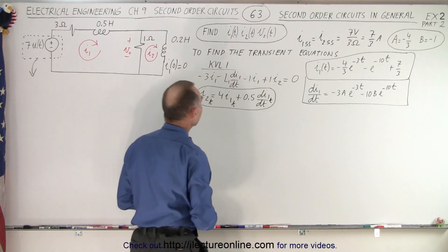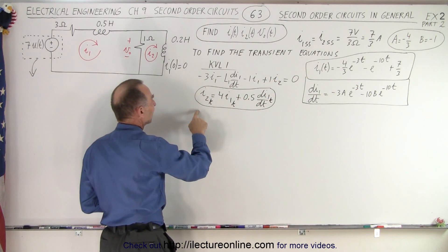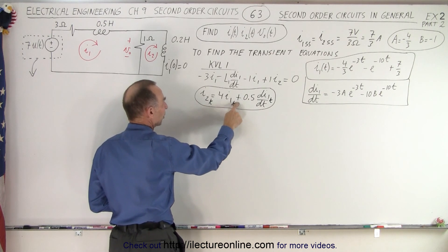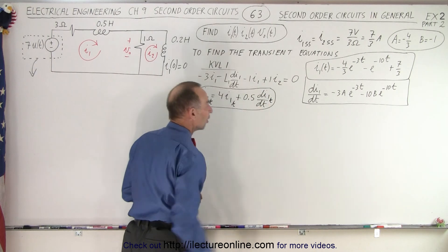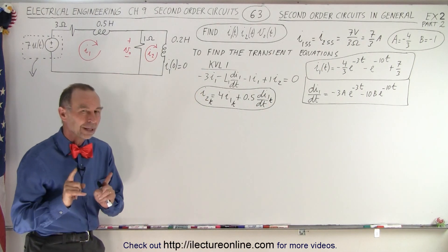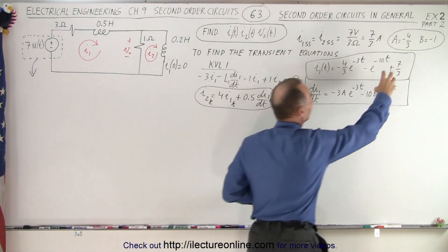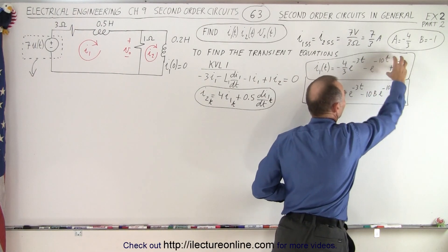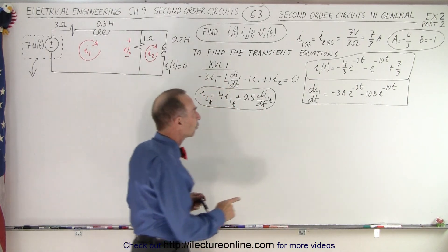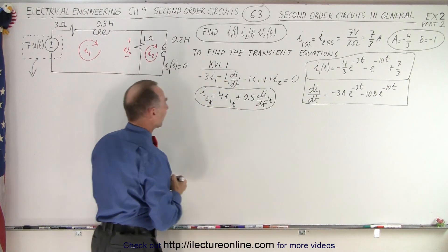We still have to plug that in, and notice that from the previous video the current for the second mesh was four times the current of the first mesh plus 0.5 times the change of that current with respect to time. But notice that was for the transient equations, and that means this would not be added because that's part of the steady-state portion of that equation. So the transient equation would be minus this, so we have to be careful when we add that.